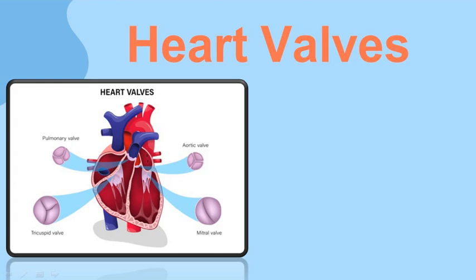Typically, arteries lack valves. However, there are valves on the two arteries exiting the right and left ventricles that stop blood from flowing backward — the aortic and pulmonary valves — which are typically regarded as heart valves. When the left ventricle contracts, the aortic valve opens and the mitral valve shuts, allowing blood to flow into the aorta.